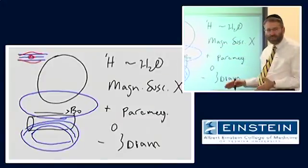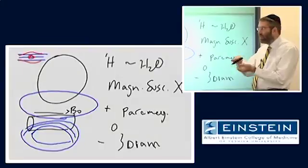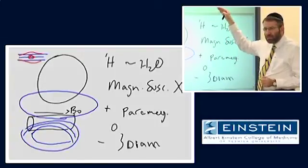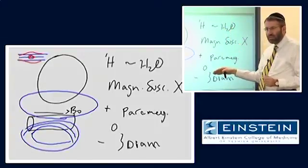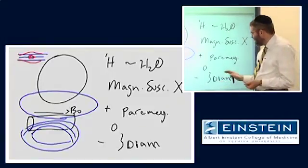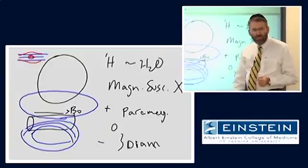Paramagnetic substances have the opposite effect. They draw those field lines together. The magnitude of paramagnetism extends over a much broader scale than diamagnetism.